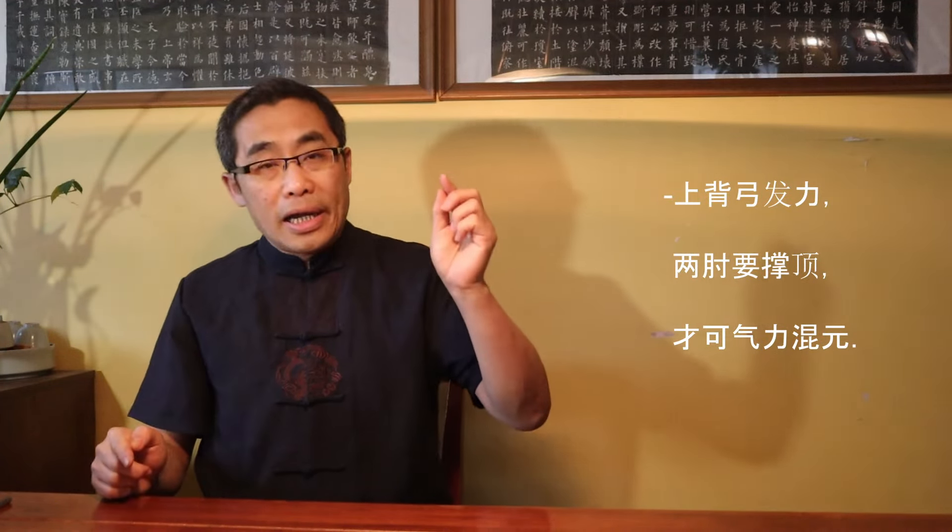Now, let's move on to today's new proverb. This one introduces an important body structural concept that is used in Fajin or Energy Releasing Practice. I will translate the Chinese version word by word. Then, I will explain the whole proverb in detail. The proverb is 上倍功发力, liang zhou要称零,才可气力混元. Translation: While sending power from the upper back, elbows should extend outward so that the power will be strengthened and become impactful.